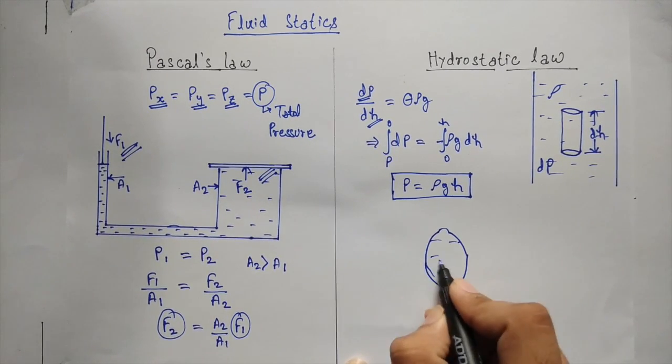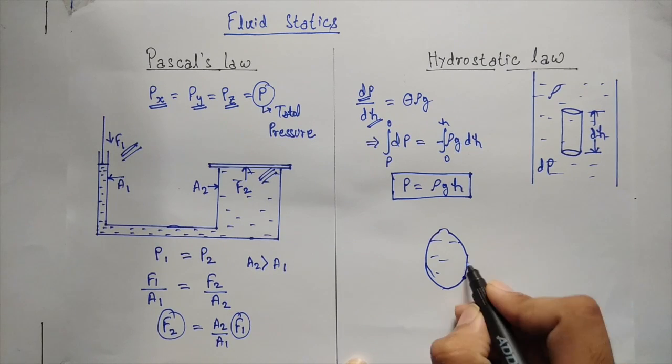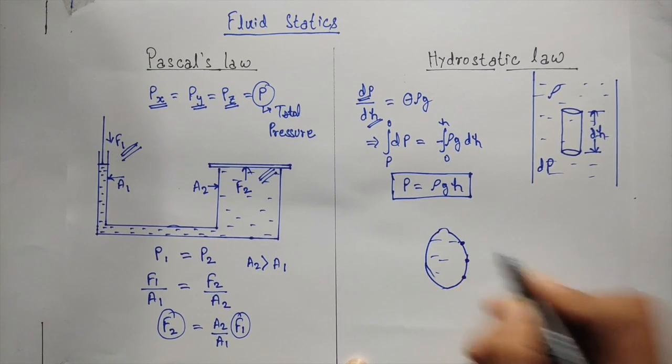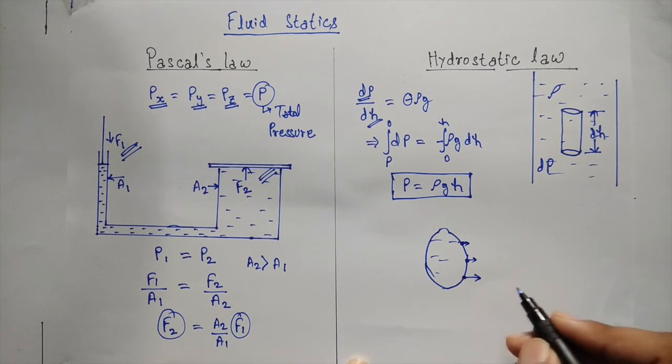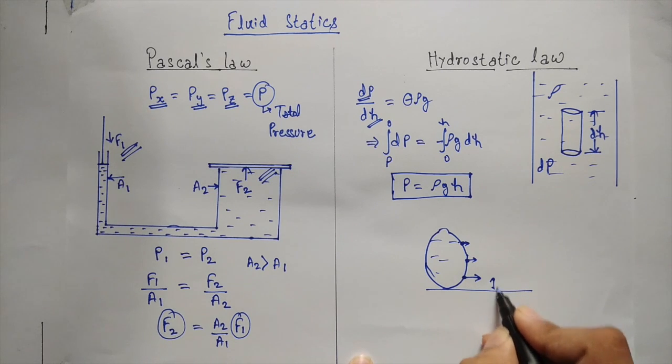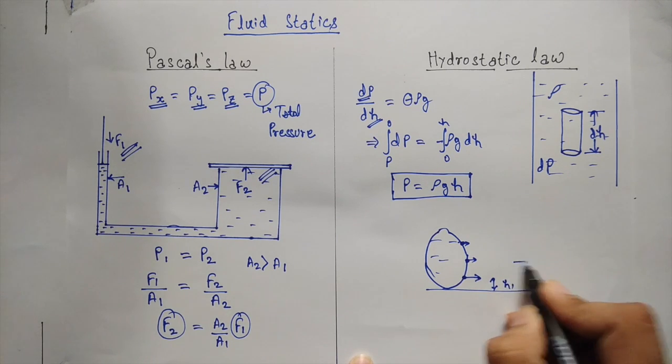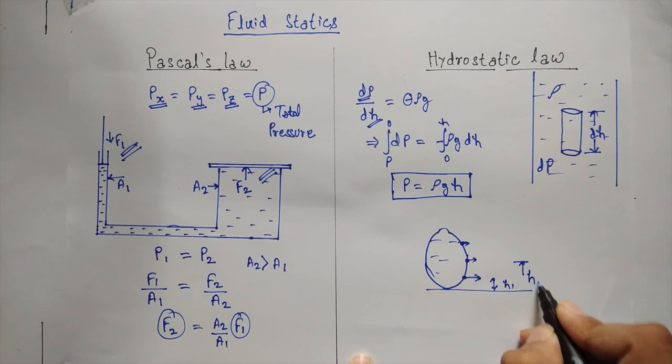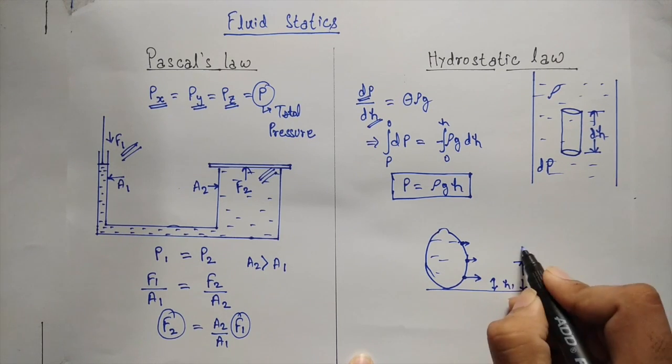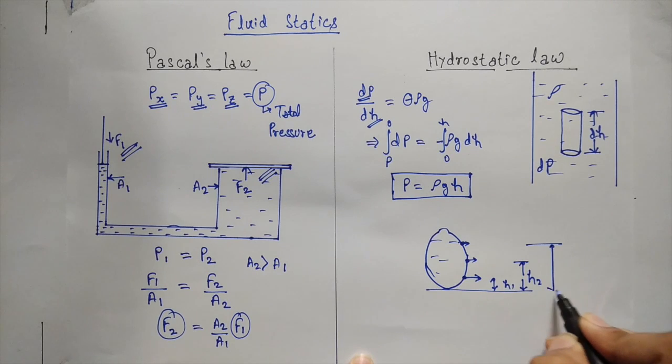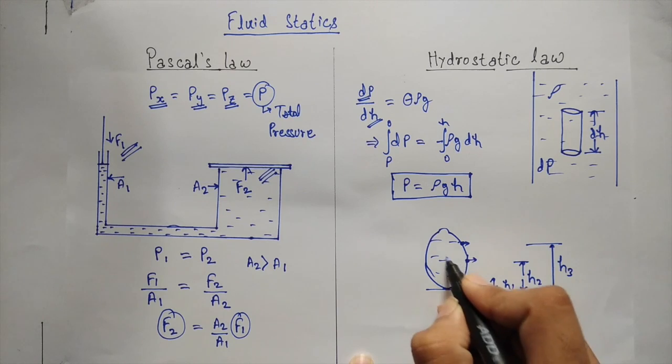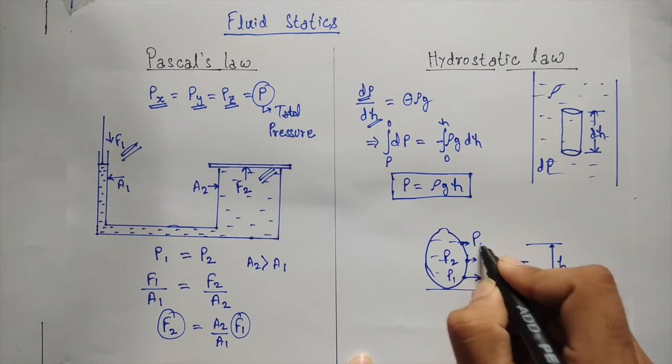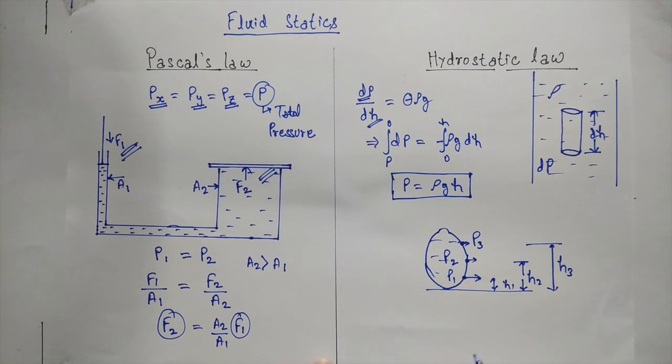Make a hole here, here, and here. The water will come out from all these three holes. Let the height from here be h1, h2, and here h3. Respective pressures will be p1, p2, and p3.